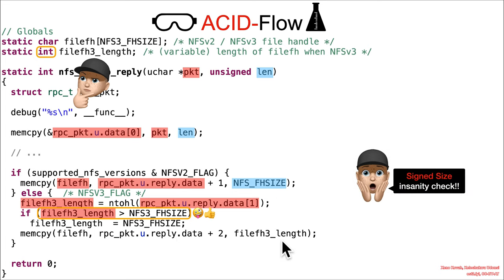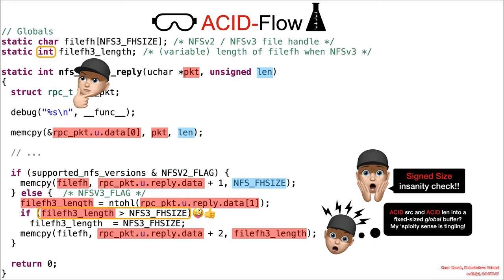It will continue into this memcopy with an attacker controlled size sourcing from attacker controlled data, and that's a memcopy which should signal your sploity sense: ACID source, ACID length going into a fixed size global buffer. It's a global buffer right here and that's not safe. That's the common sweet potato issue of unsafe unbounded functions.